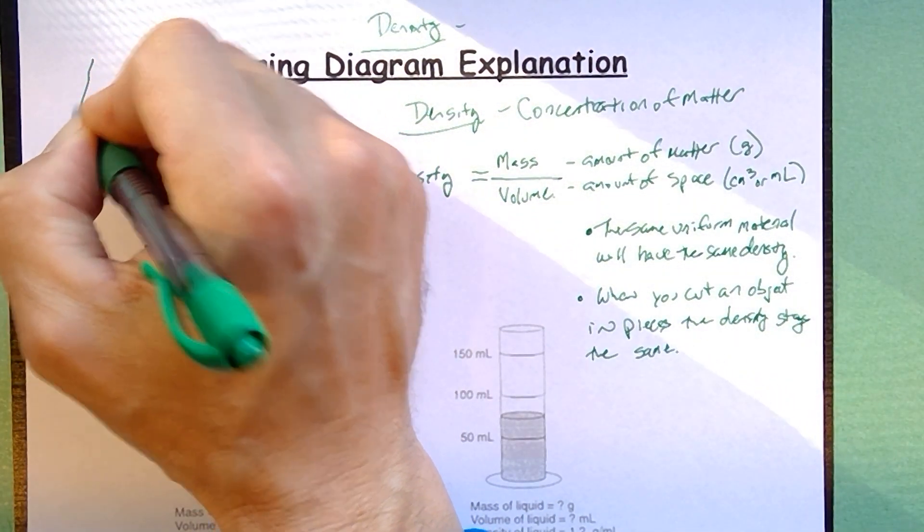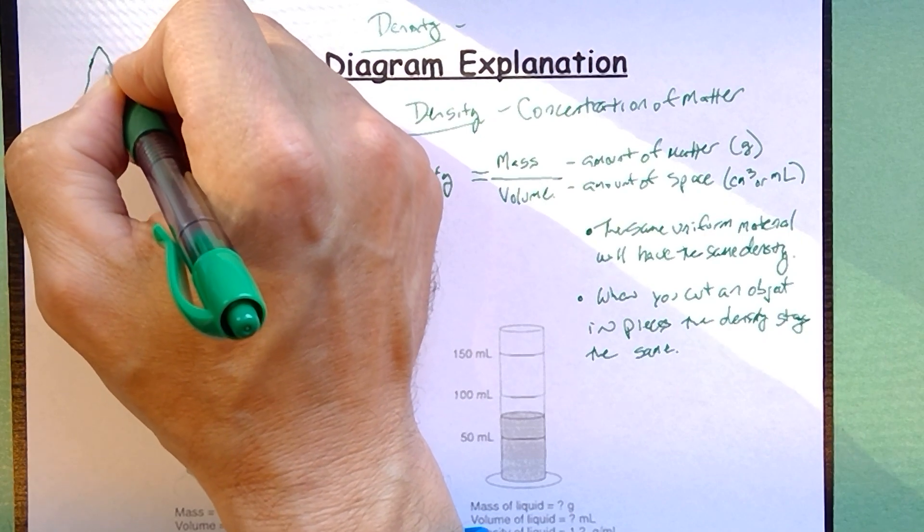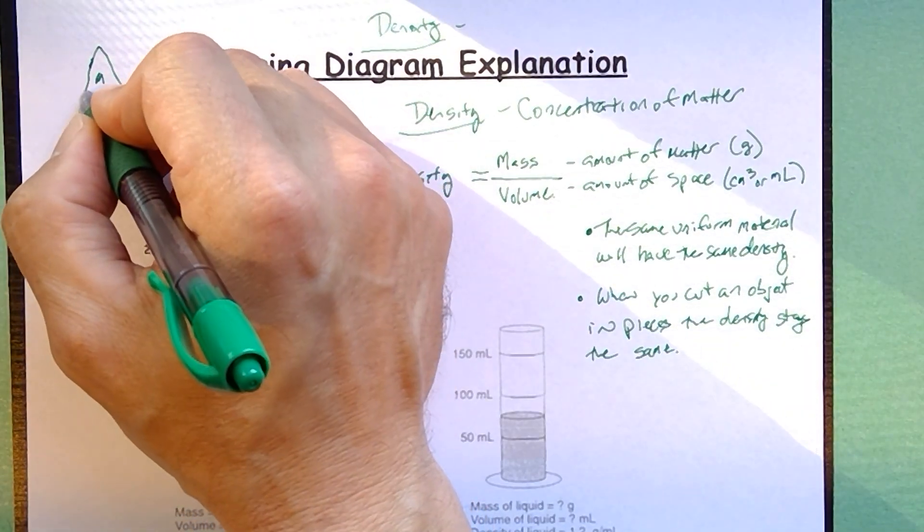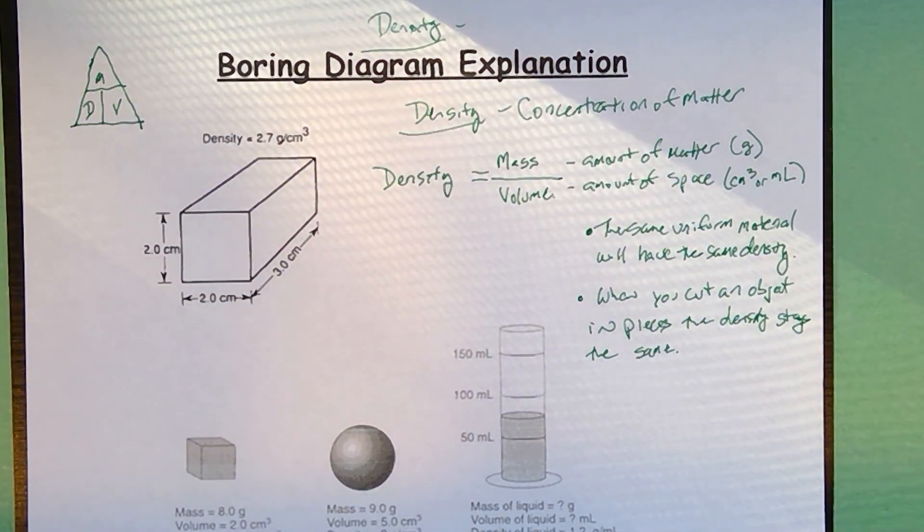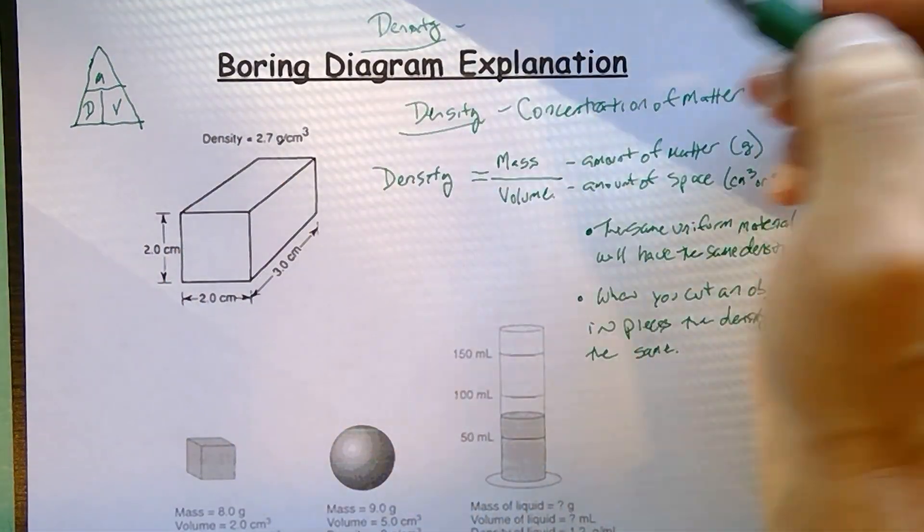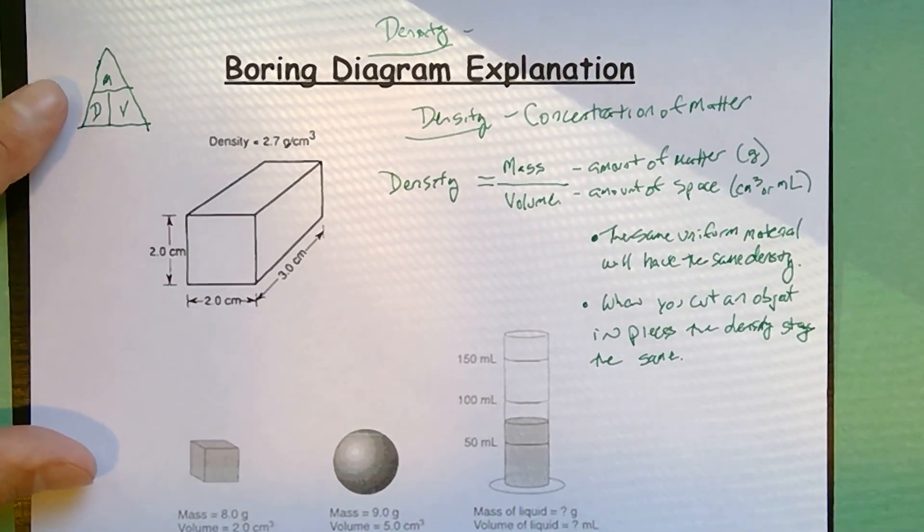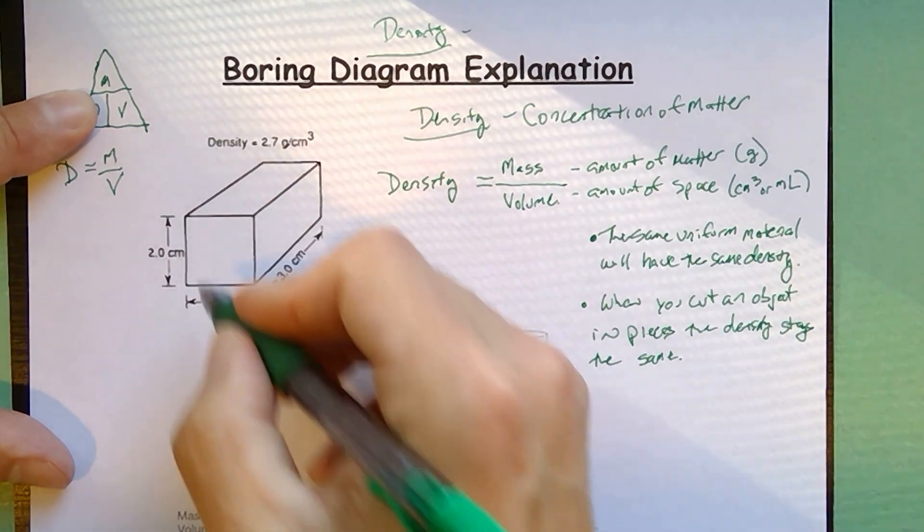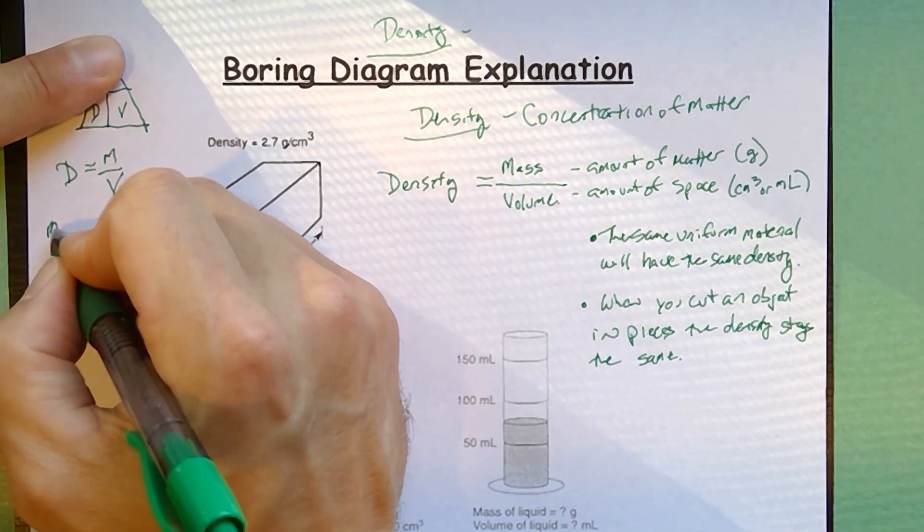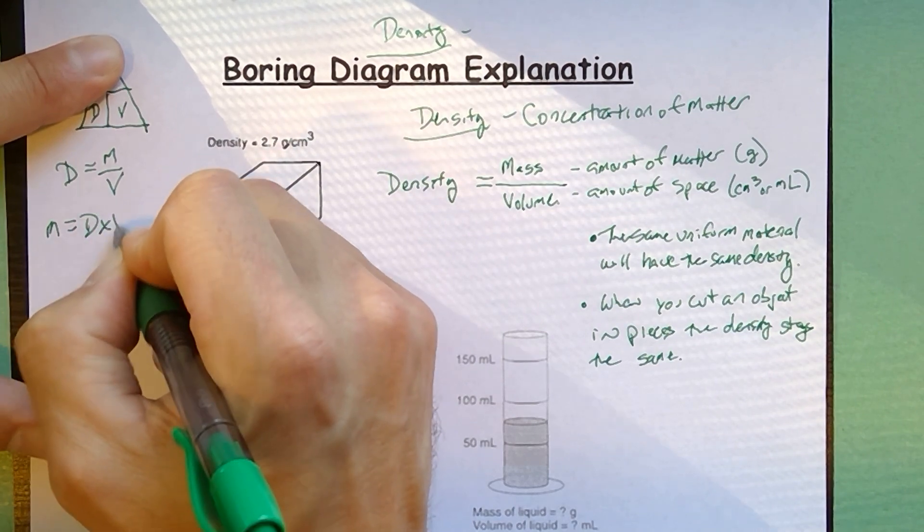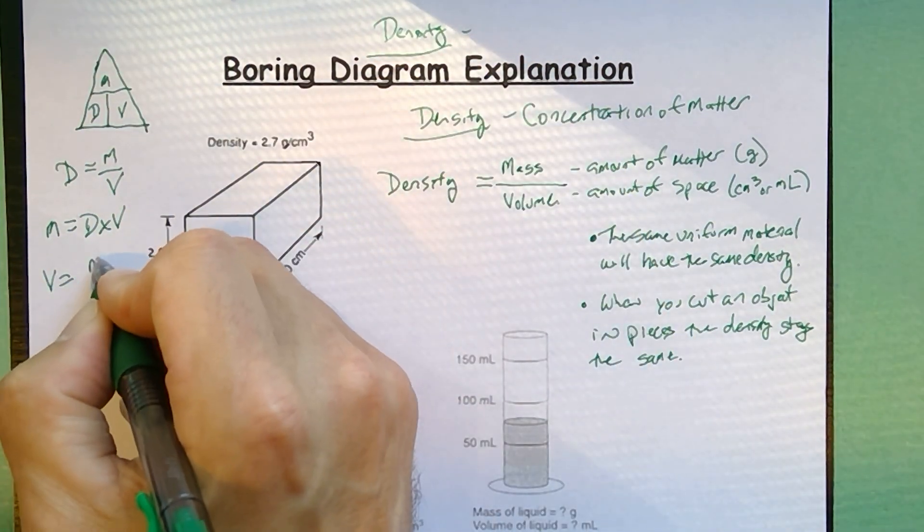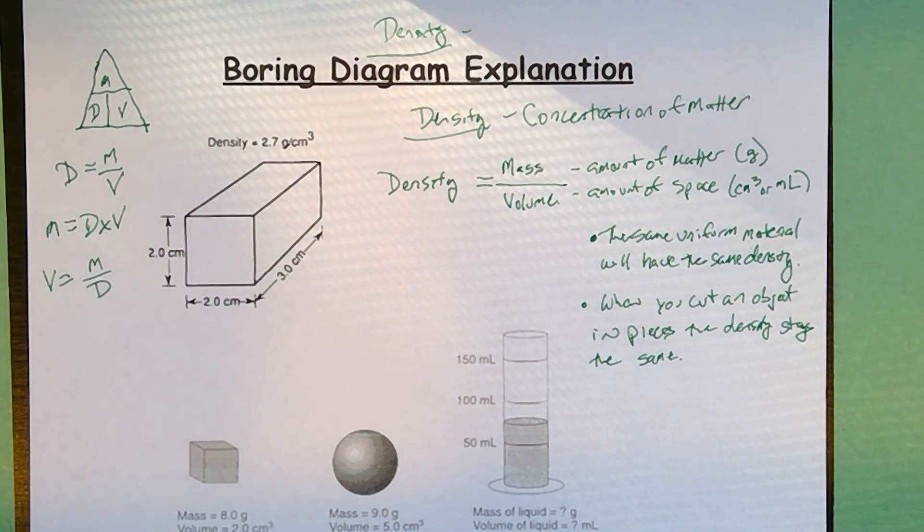Now some of you probably have seen that there are actually three formulas that you can use to calculate density. One little trick or mnemonic or device that you could use is called the DMV triangle. You have to make sure the m goes on top, so mountains over valleys. You cover up the quantity you're looking for. So when I cover up the d, I get d is equal to m over v. When I cover up the m, mass is equal to density times volume. And if I cover up the v, volume is mass over density. You could always use algebra to do that, but sometimes it's easier just to have a formula you can plug straight in.